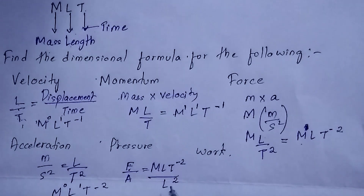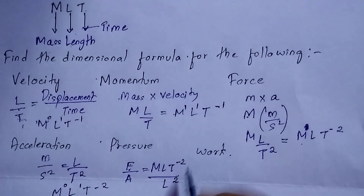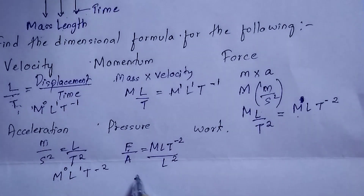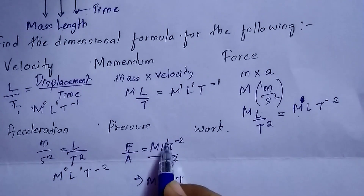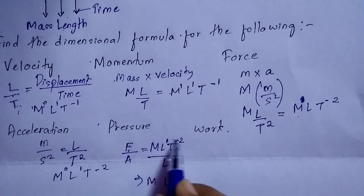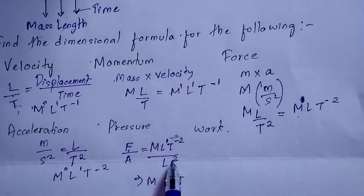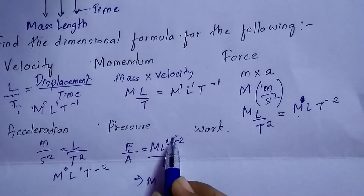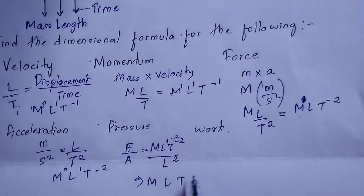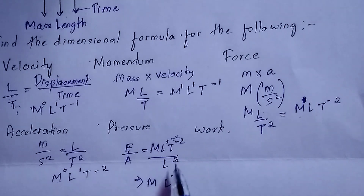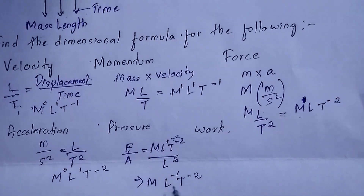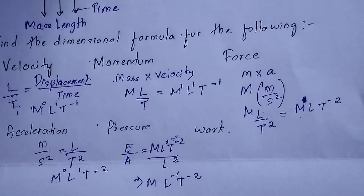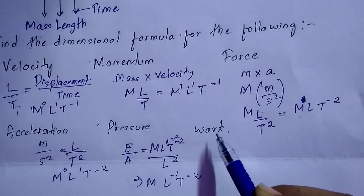Area is length squared, L². So the dimensional formula for pressure: M is 1, L — there was already 1 and the L² from area goes up, so 1 minus 2 gives L⁻¹, and T is already minus 2. So the dimensional formula for pressure is M¹L⁻¹T⁻².